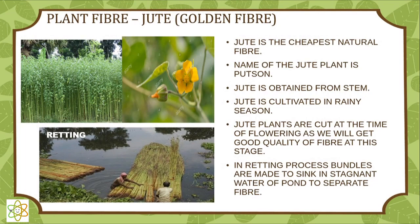After cotton comes jute, which is the commonest and cheapest fiber. It is called the golden fiber. Jute is the cheapest natural fiber. The name of the jute plant is Patsun. Jute is obtained from the stem and is cultivated in the rainy season. Jute plants are cut at the time of flowering, and we get good quality fiber at this stage.